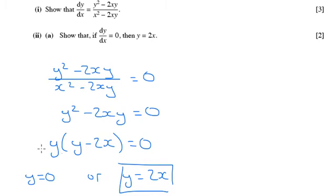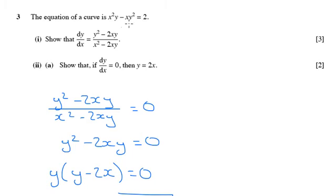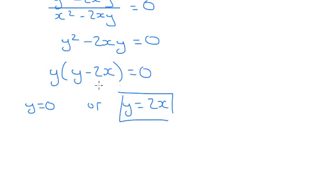The reason y equals 0 isn't acceptable is if we go back up to the top, if y equals 0, then we'd have 0 here and here and we'd have 0 equals 2, which obviously is not true. So y can't equal 0, the only solution is that y equals 2x.